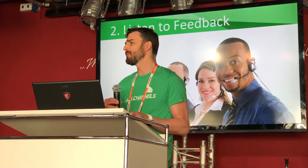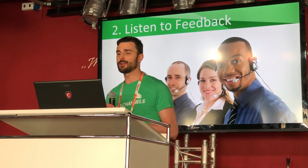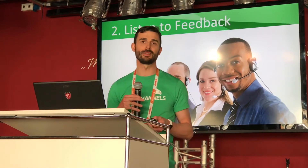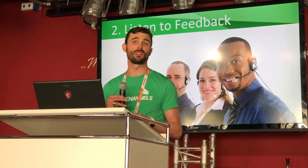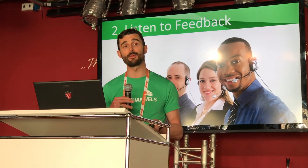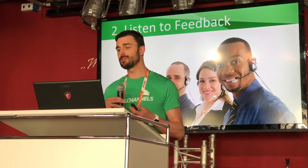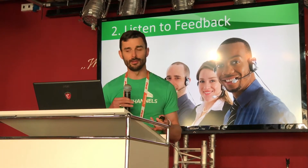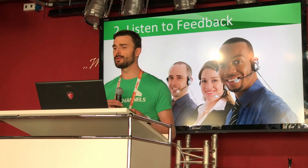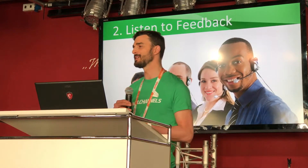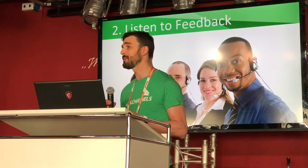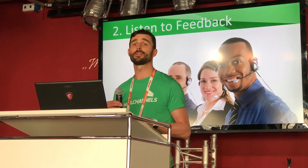Even if you do a great job of vetting new customers, spammers are still going to find ways to get into your systems. Fortunately, many email receivers and the reputation providers who support them are more than happy to give you the information you need about abuse that's happening on your servers, and they do this using something called a feedback loop. The first and most important thing you can do to stay off blacklists is to tune into these feedback loops to see what email receivers are thinking about the mail coming from your network.